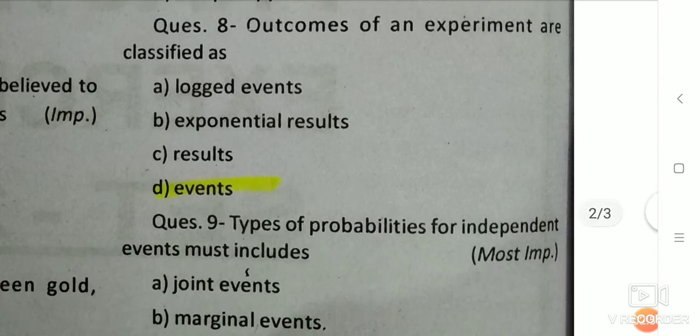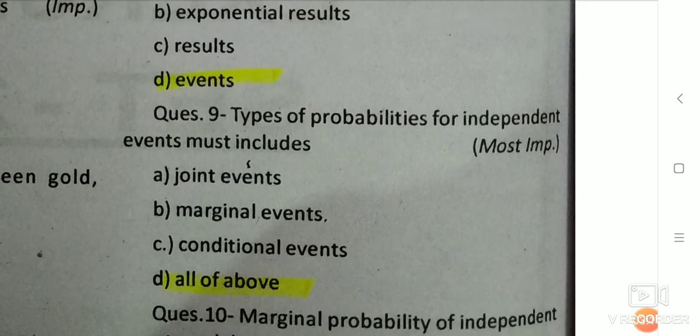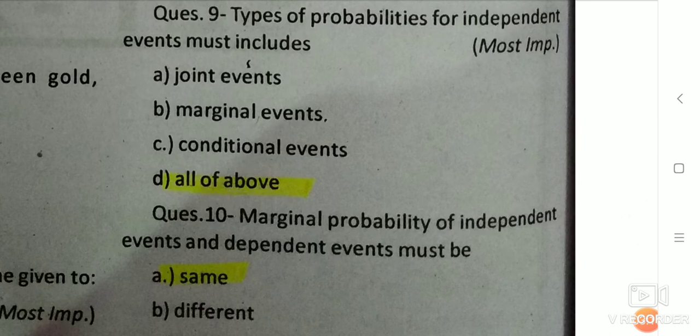Q8: Types of probabilities for independent events must include — the answer is all of the above, which includes joint events, marginal events, and conditional events. Q9: Marginal probability of independent events and dependent events must be — the right answer is same.